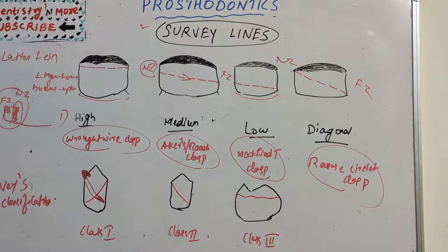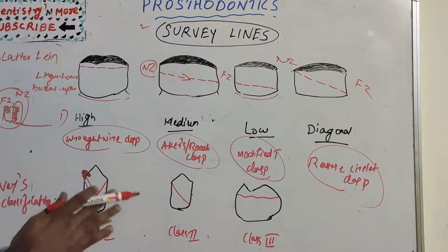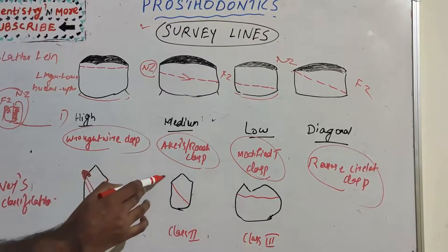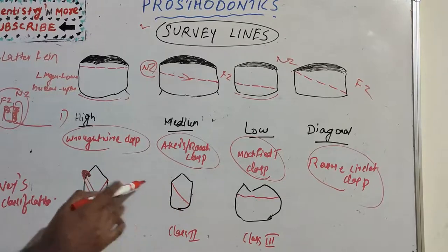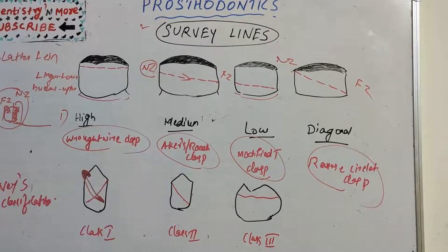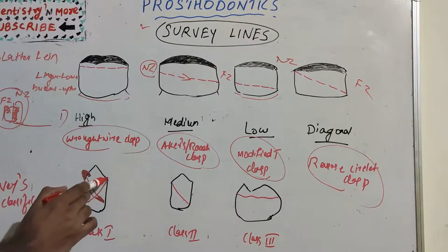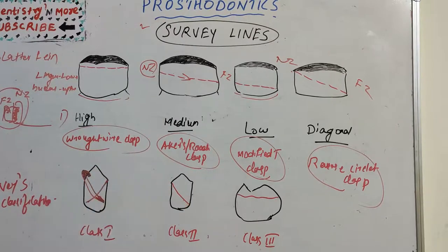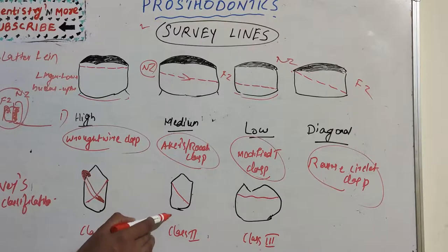In Class 2, the survey line also runs diagonally across the tooth surface, but it is the mirror image of Class 1. Since it is reversed, a gingivally approaching clasp arm is suggested for Class 2.